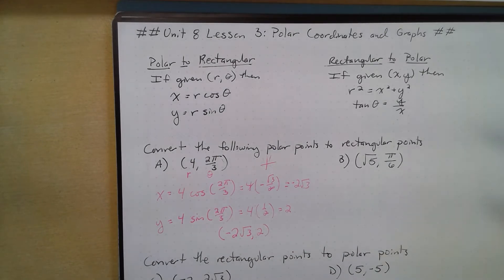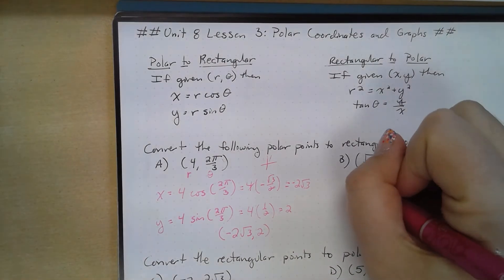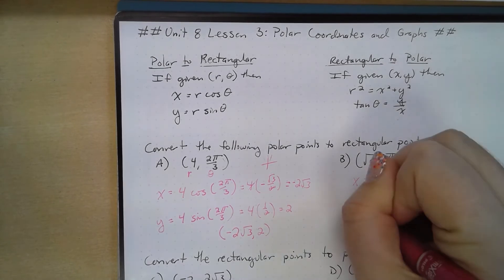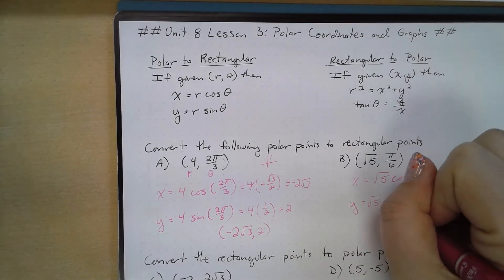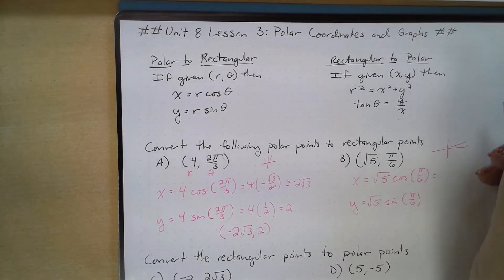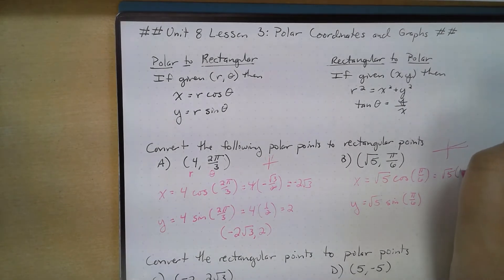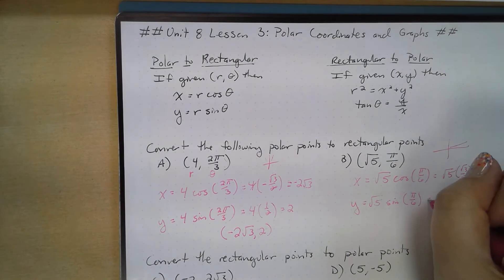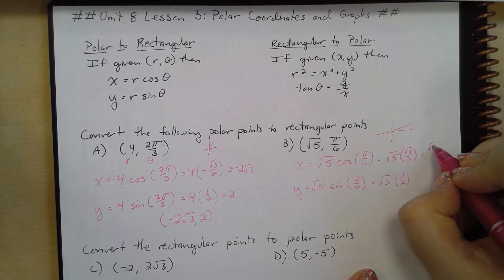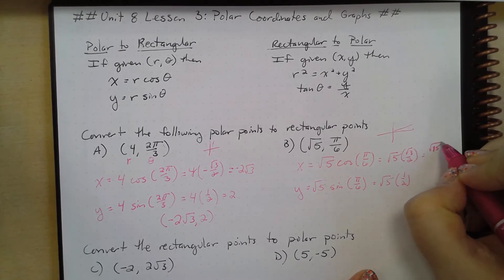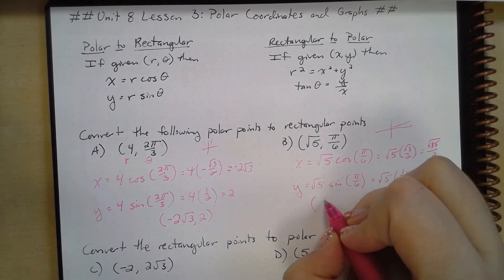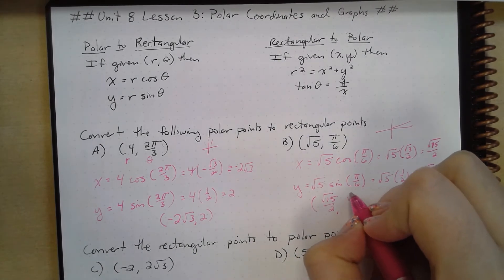Let's do one more. We've got (√5, π/6). So my x coordinate is going to be √5 cosine of π/6, and my y coordinate is going to be √5 sine of π/6. Cosine of π/6 is √3/2, so x equals √5 times √3/2, which gives us √15/2. And y equals √5 times 1/2, which gives us √5/2. So our rectangular coordinates are (√15/2, √5/2).